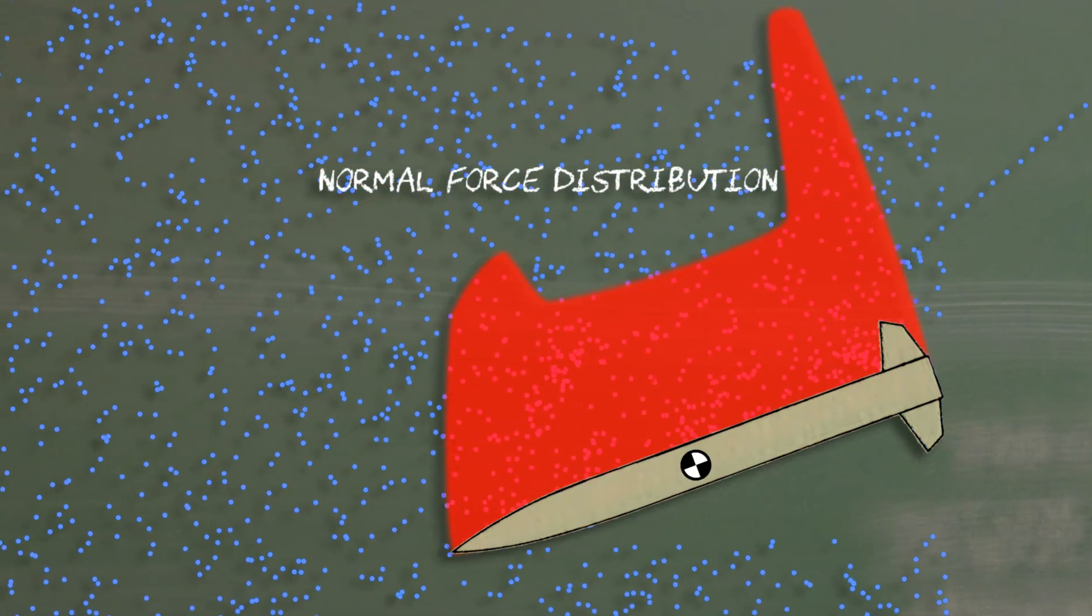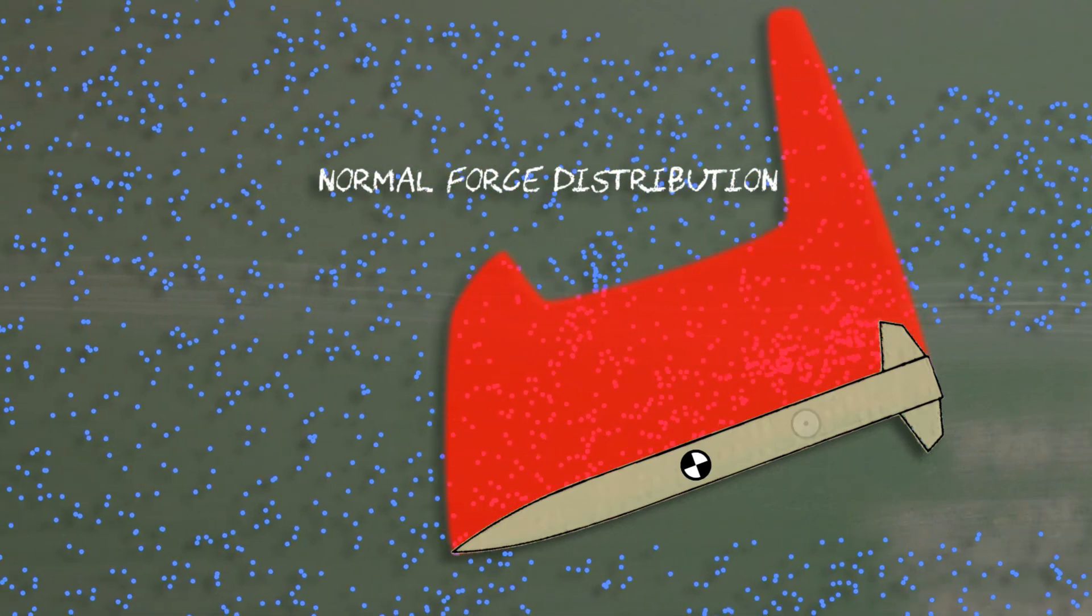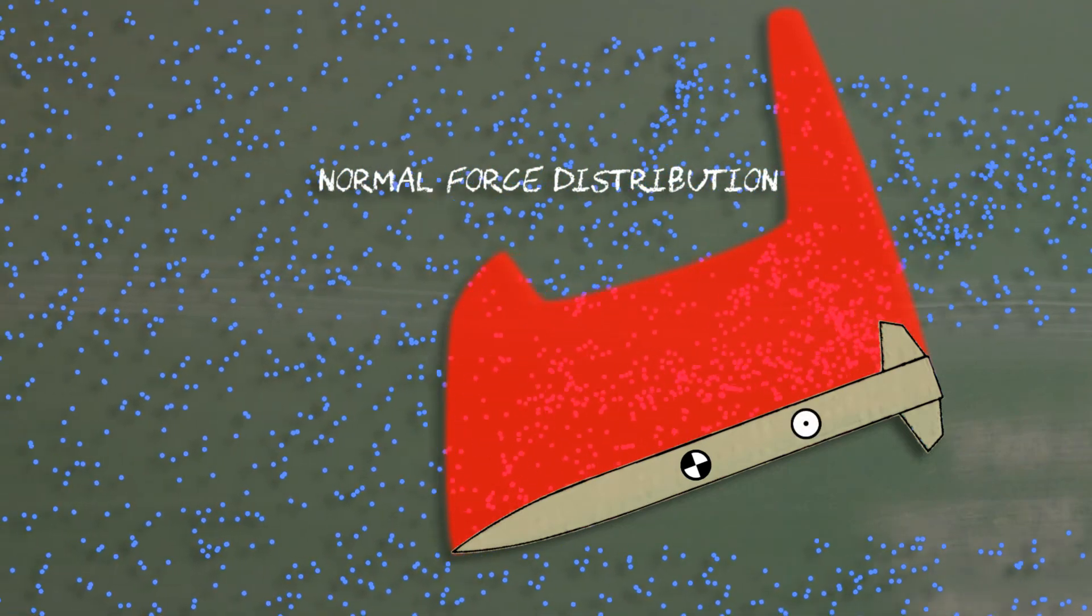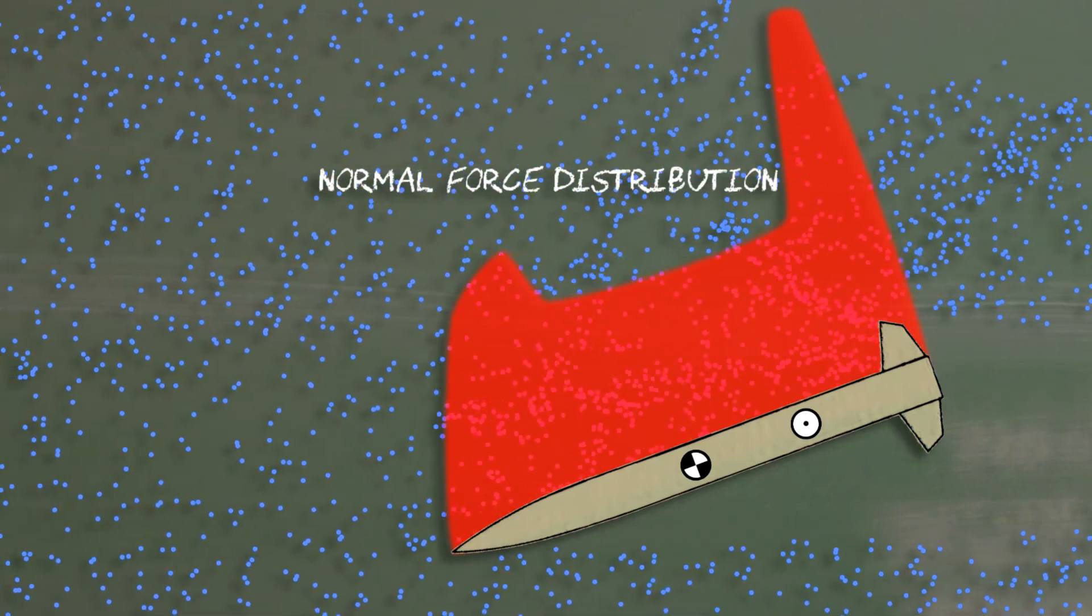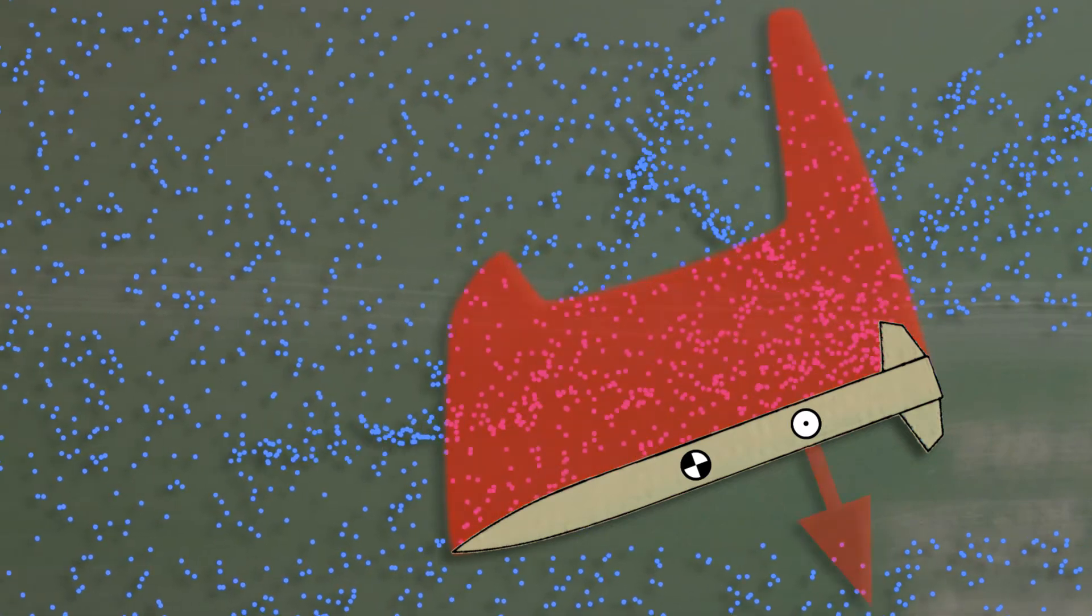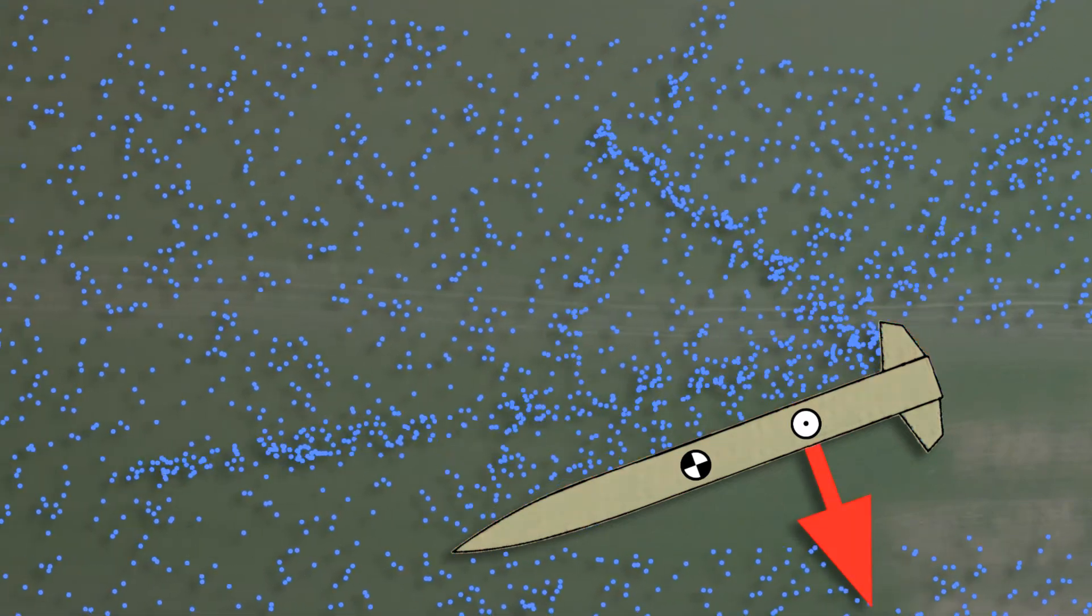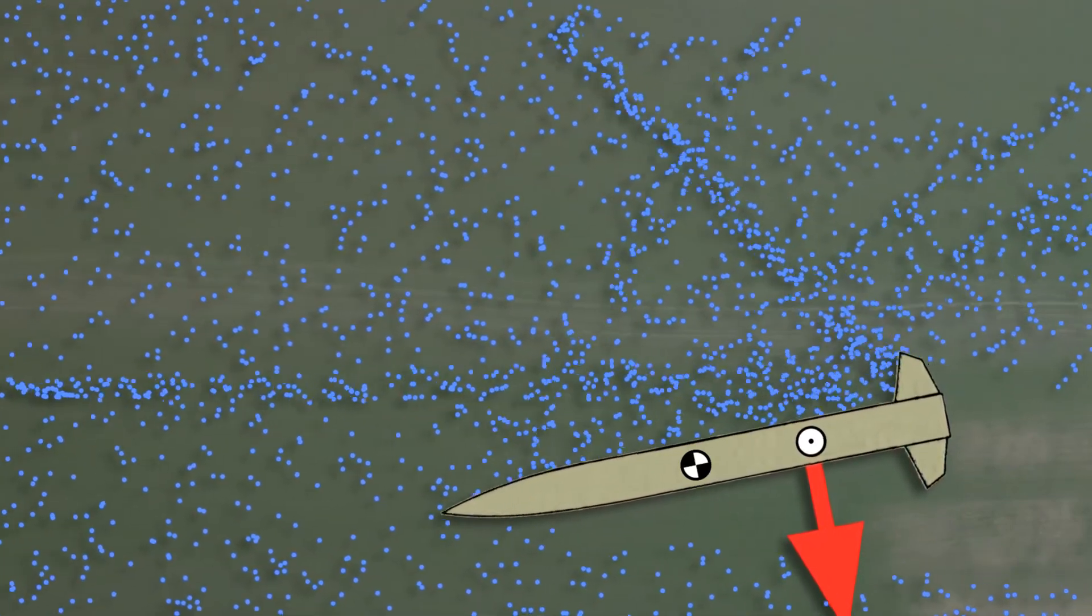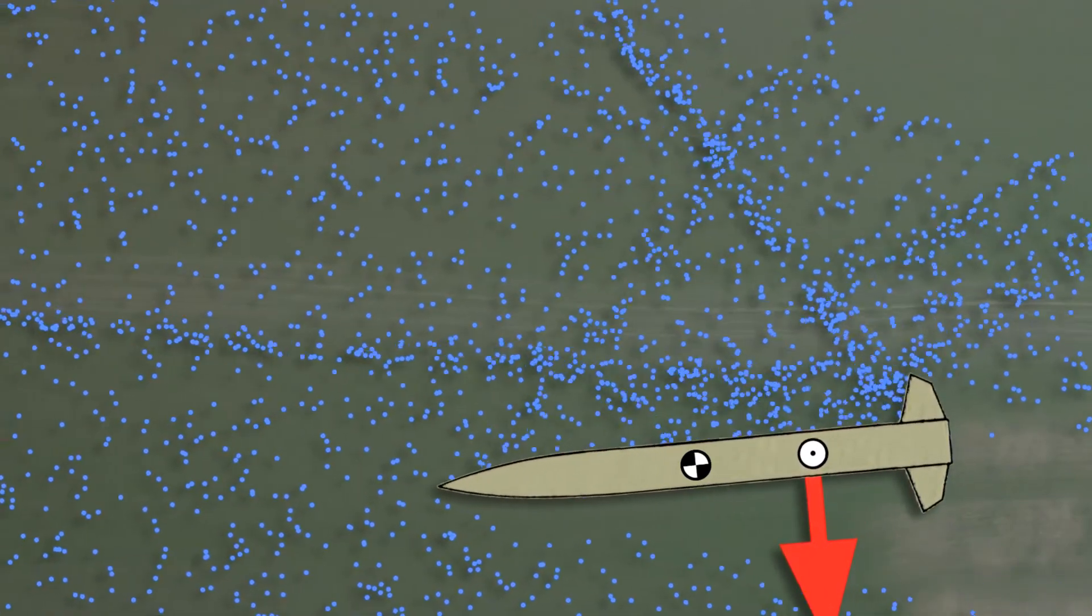Along this distribution there is a point where as much normal force acts ahead of it as behind it. This is much like the gravitational force ahead and behind of the balance point. This point is called the center of pressure, and all of the forces along the rocket can be summed up to a single force said to act only at the center of pressure. This force acting at the center of pressure will produce a moment about the center of mass rotating the rocket.